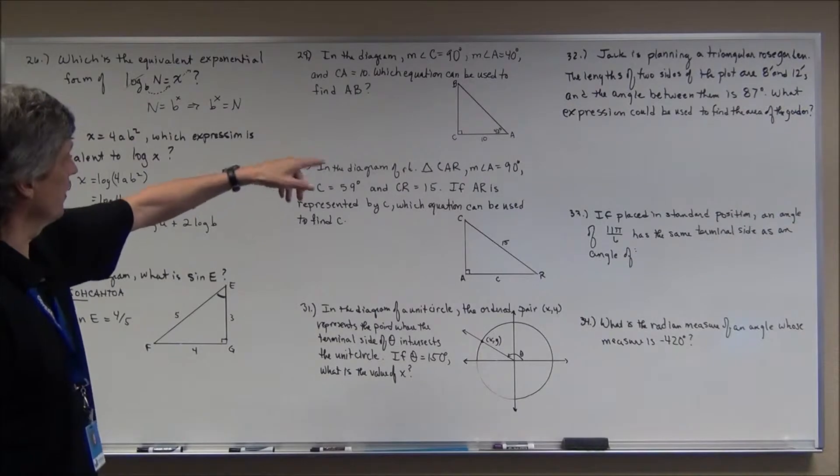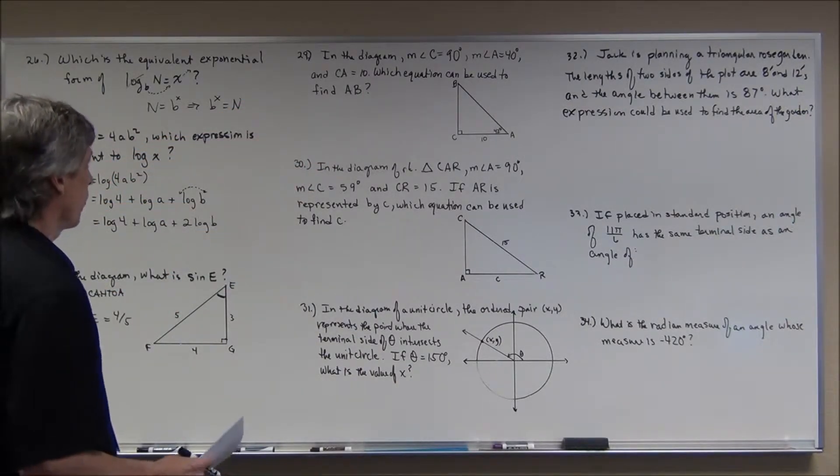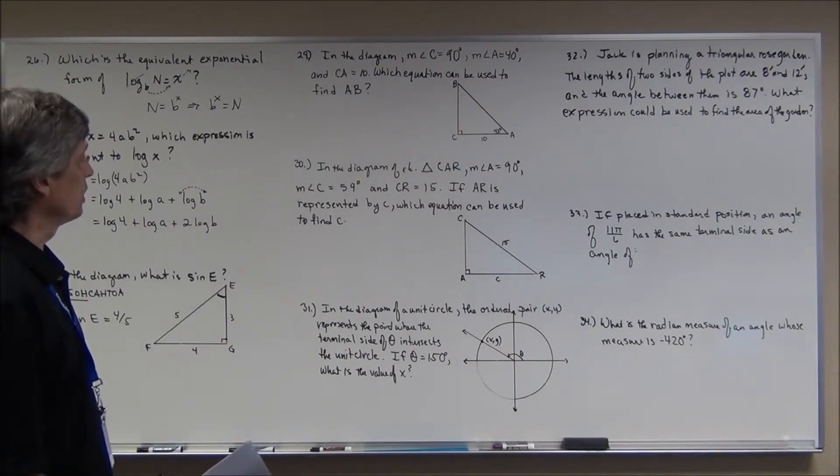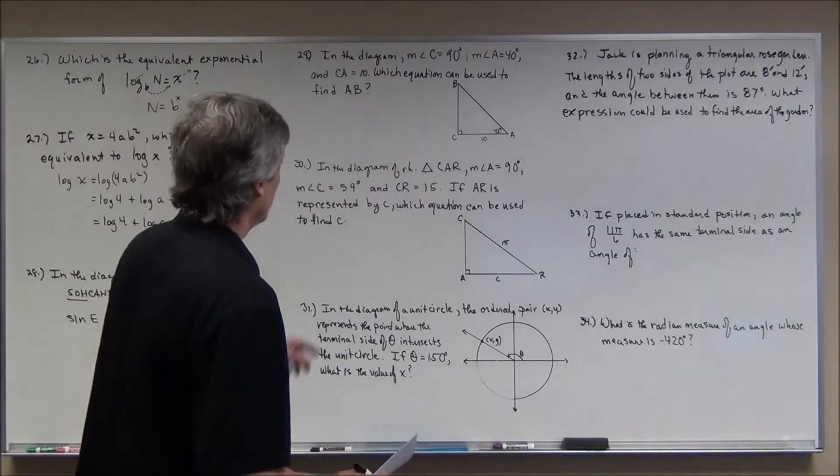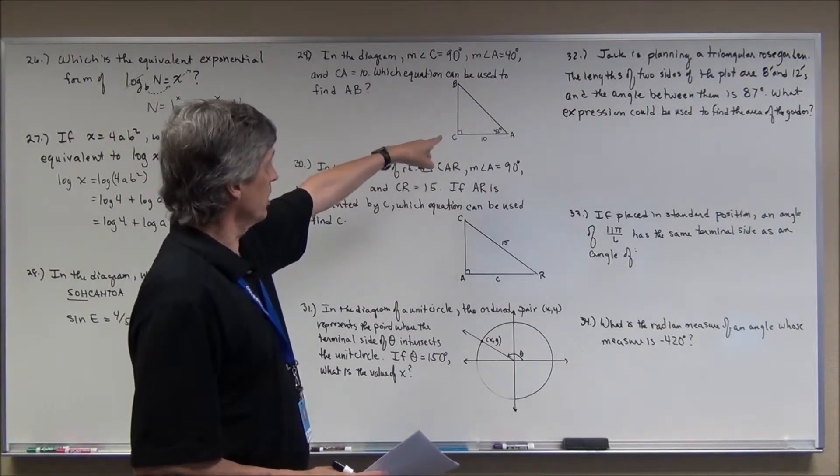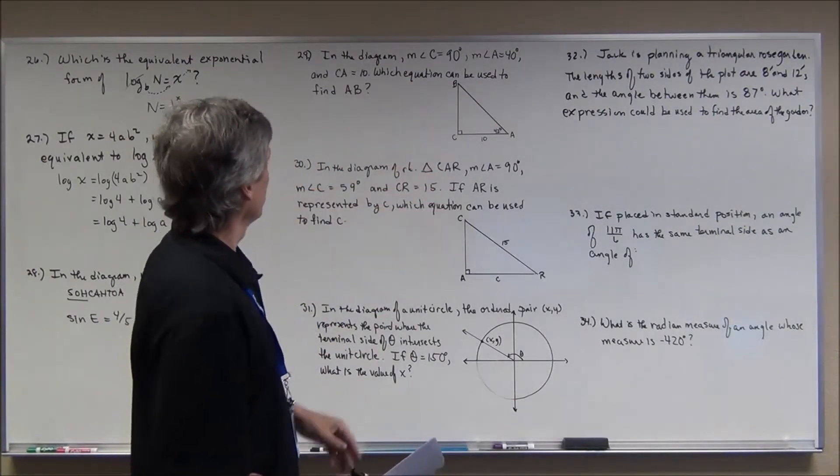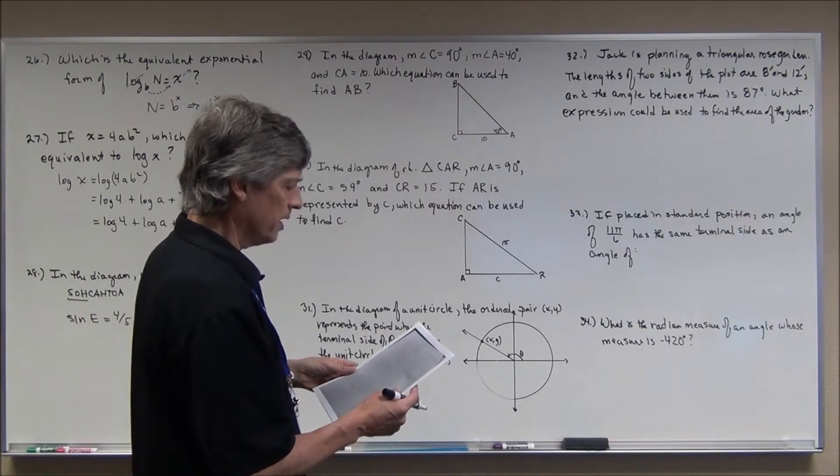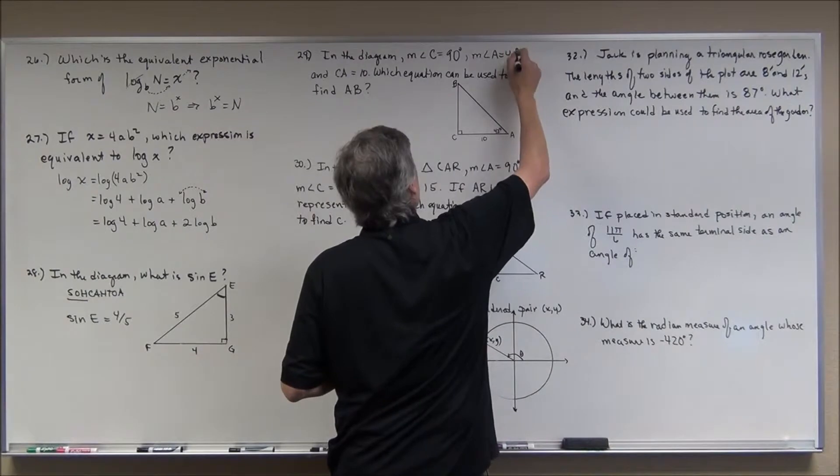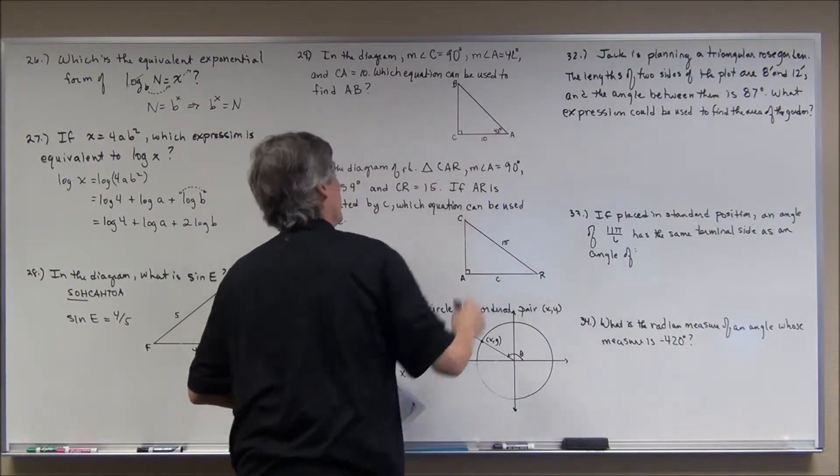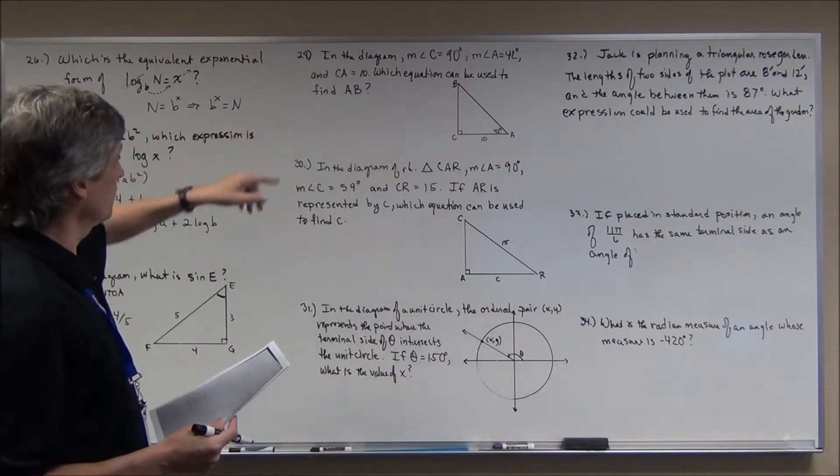And then up here, I have another diagram. It says, in this diagram, the measure of angle C is 90 degrees. And the measure of angle A is 40 degrees. And CA is 10. Which equation can be used to find AB? Well, they gave us the diagram, which is nice. If they didn't give us the diagram, that's the first thing I do is I draw out a right triangle. And I know it's a right triangle because I've got a 90-degree angle. And I label everything. Now, wait a minute. I've got the... Is this 42 or is this 40? Oh, I can't even read. This is a 42 here.